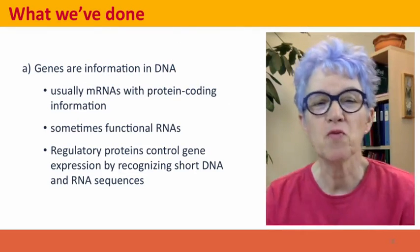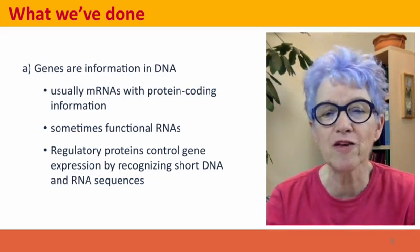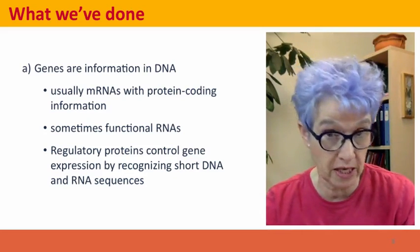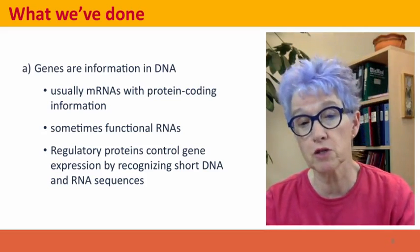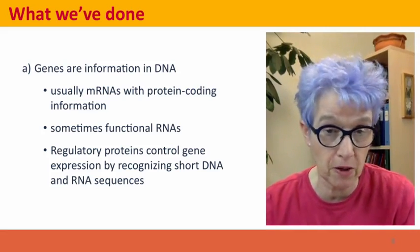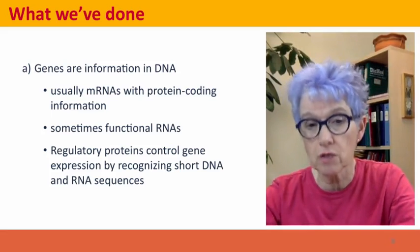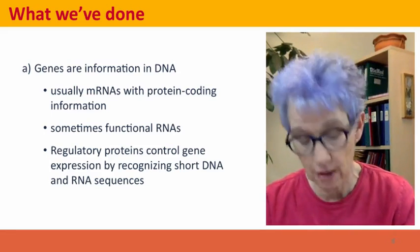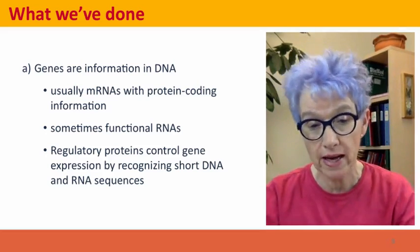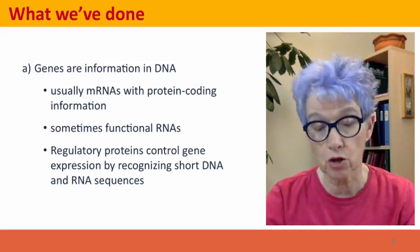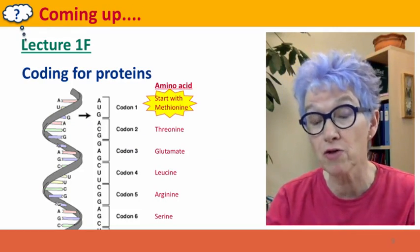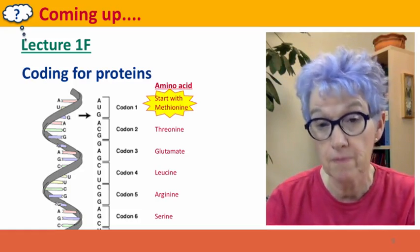Now, what we've done, we've talked about genes. The genes are basically informational entities in our DNA. Sometimes they specify functional RNAs, like parts of the ribosome. Most of them specify messenger RNAs that code for proteins. And genes are identified by the cell by the presence of regulatory signals, short sequences in the DNA that tell RNA polymerase to make an RNA copy, and short sequences that act in the RNA to tell the ribosome where to start and stop to make a protein. Coming up next, we're going to talk about how this coding for proteins actually works. I hope to see you there.